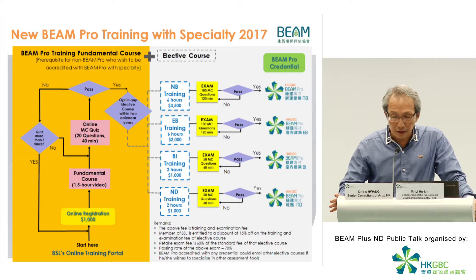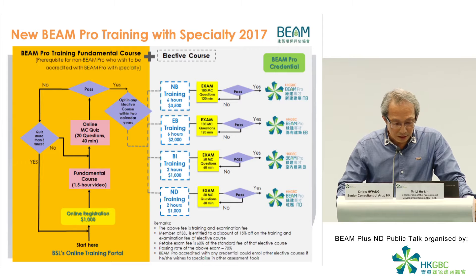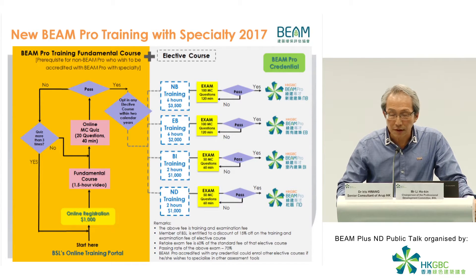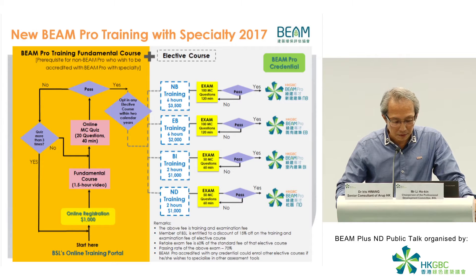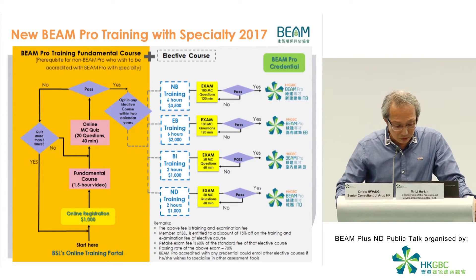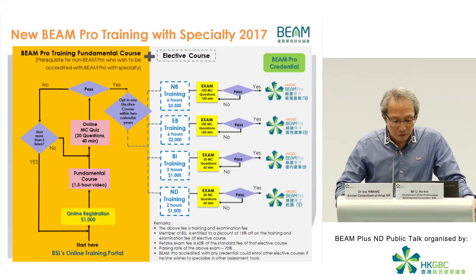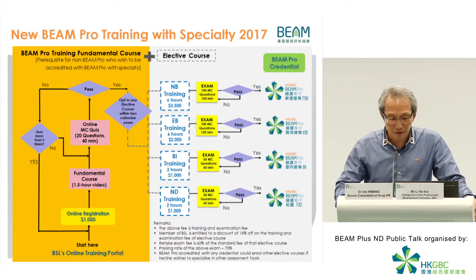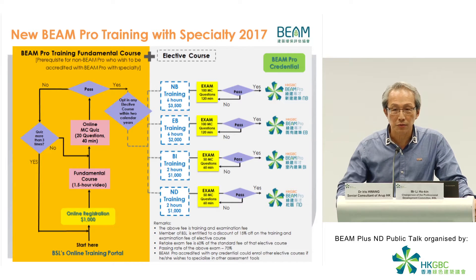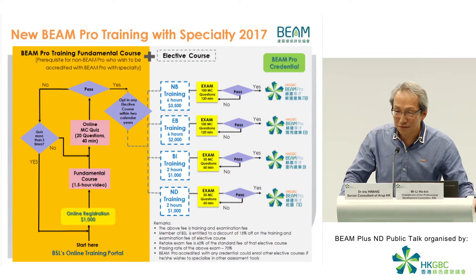For each elective, after attending the training, you do the exam. For New Building: 100 questions, 120 minutes. For Existing Building: 100 questions, 120 minutes. For Interiors: 50 questions, 60 minutes. For Neighborhood: 50 questions, 60 minutes. These are all multiple choice questions — you don't have to write any text or description. If you pass, you move on and become a Beam Pro with that credential. You can do one, two, three, or all four credentials as you wish — we do encourage all four if you're interested.